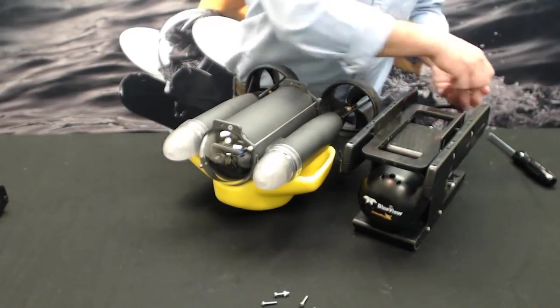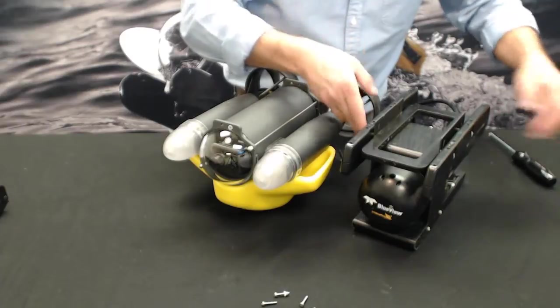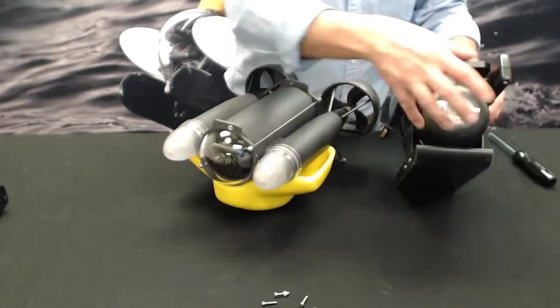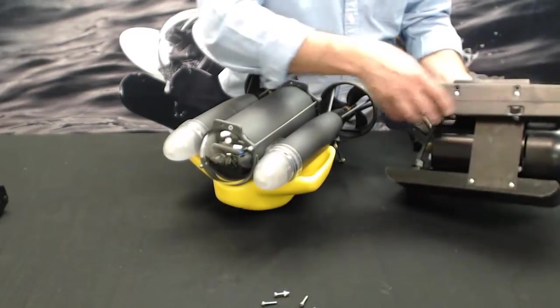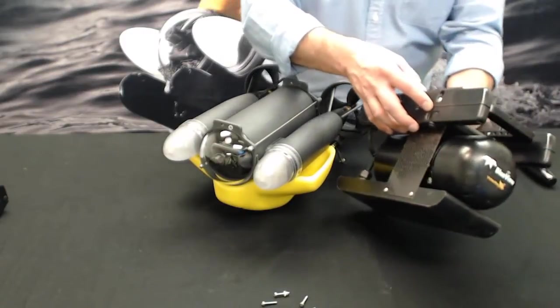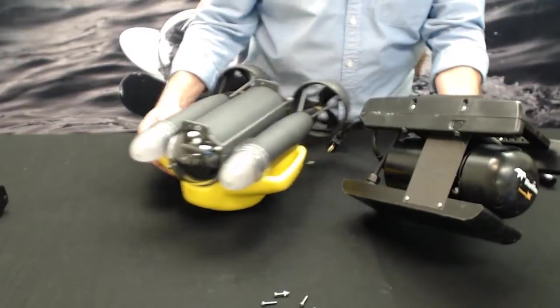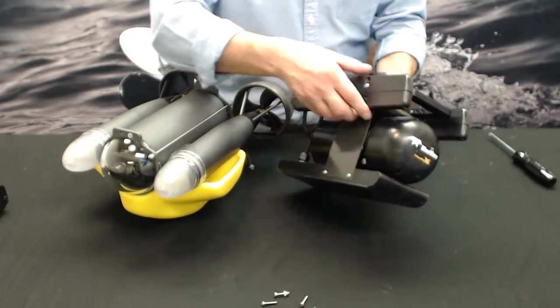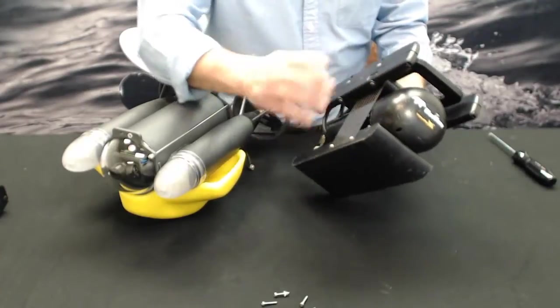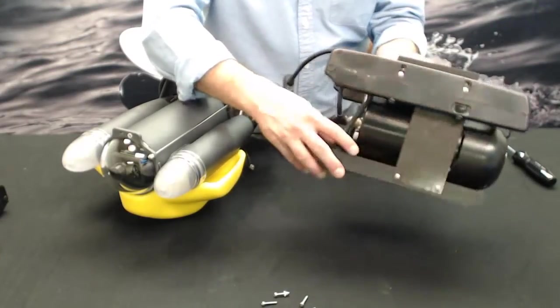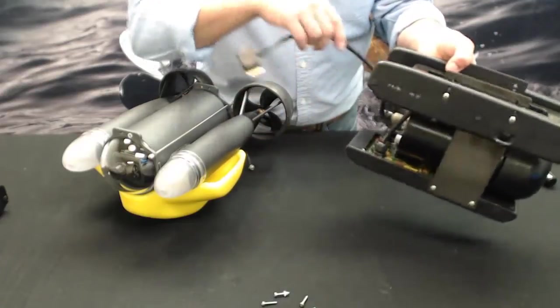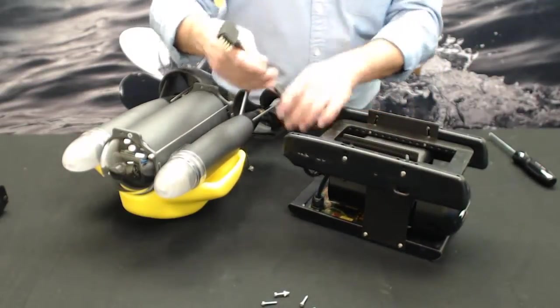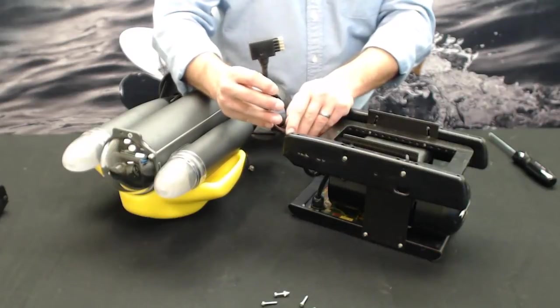Your BlueView should be delivered already assembled in the integration skid. You have the sonar head and a ballast skid similar to the one on the Pro 4 that accepts ballast weights. It's got a modem potted into the bottom that's part of the sonar electronics feeding data to the surface. We also have a 9-pin accessory whip that we'll show you how to plug in.